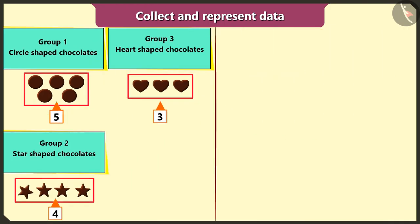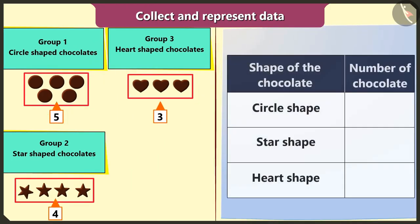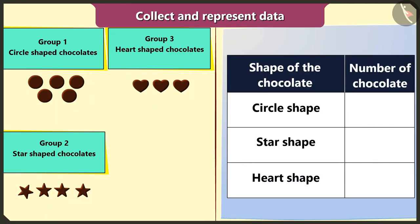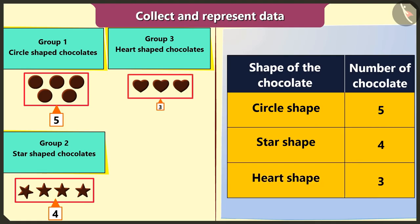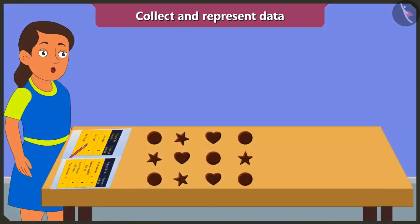Now I will represent all this data by making a table like this. The number of circle shaped chocolates is five. The number of star shaped chocolate is four. And the number of heart shaped chocolate is three.